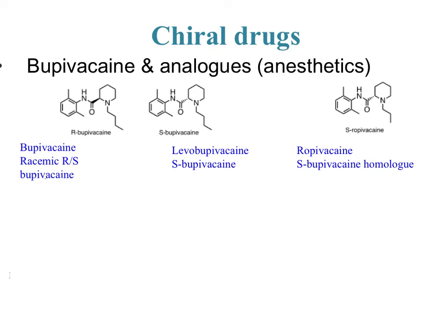Another example is for anesthetics: bupivacaine, levobupivacaine, and ropivacaine. The R and S structures of bupivacaine each have one chiral center. We're going to compare the racemic version, the S version alone, and ropivacaine — which is a homologue to S-bupivacaine, meaning it's almost the same but with a slightly different carbon chain length on the nitrogen. The racemic mixture of bupivacaine is the most potent — more potent than just the S alone, implying the R is likely the more potent factor.